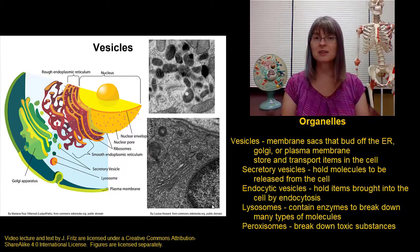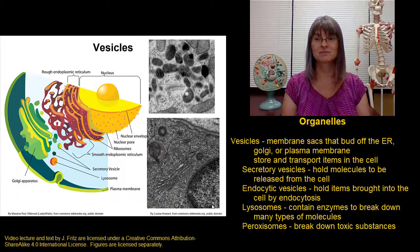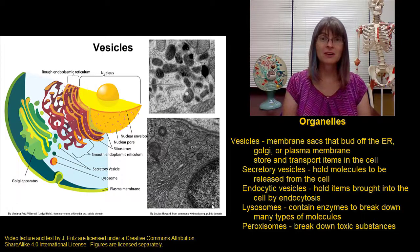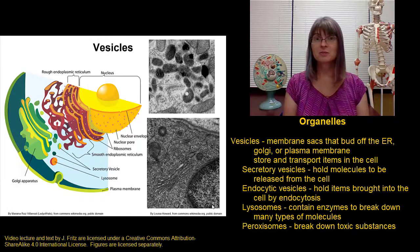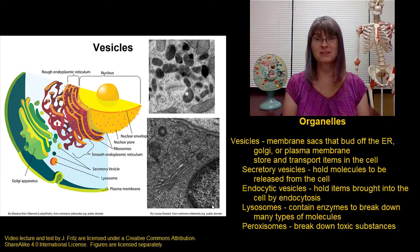Peroxisomes are similar — they also contain a number of enzymes, but the enzymes in a peroxisome are specifically to help break down toxic substances. They can help our bodies take care of drugs, alcohol, hydrogen peroxide (which is a toxin to cells), free radicals, and other things. Cells responsible for removing these sorts of toxic wastes from the body, especially those in organs like the liver or the kidneys, have a lot of peroxisomes.